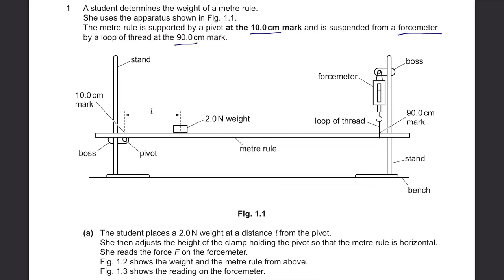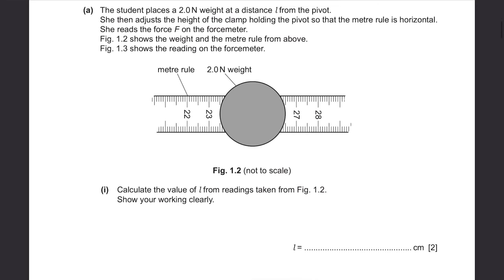There's a meter rule supported by the pivot on the left-hand side with a 2N weight, and on the right-hand side it's held by a loop of thread connected to the force meter. Part A: the student places a 2N weight at distance L from the pivot, then adjusts the height of the clamp holding the pivot so that the meter rule is horizontal. She reads the force F on the force meter.